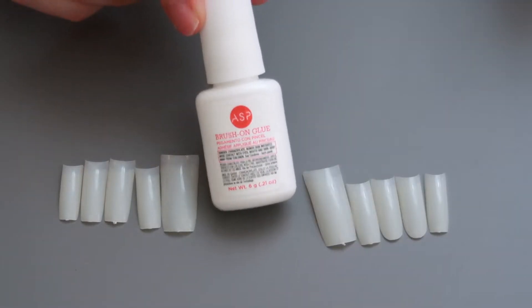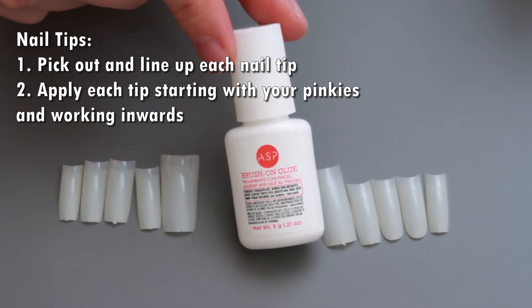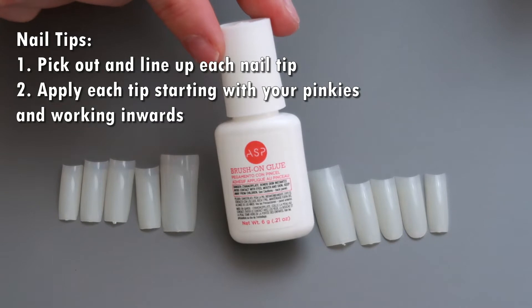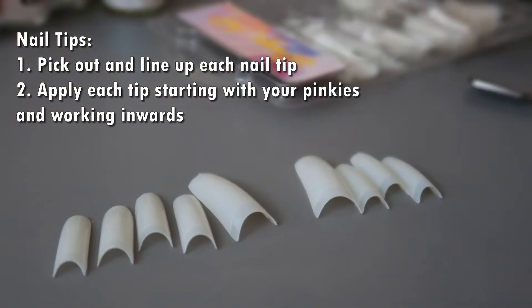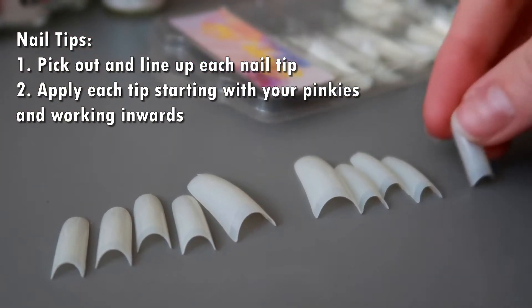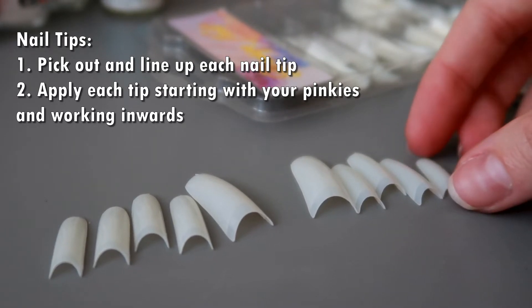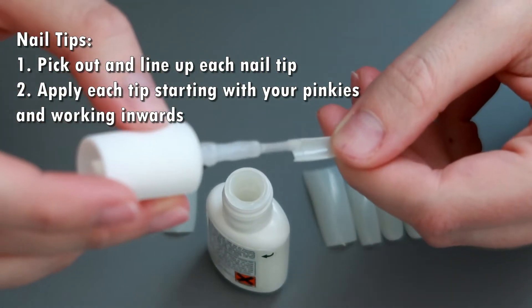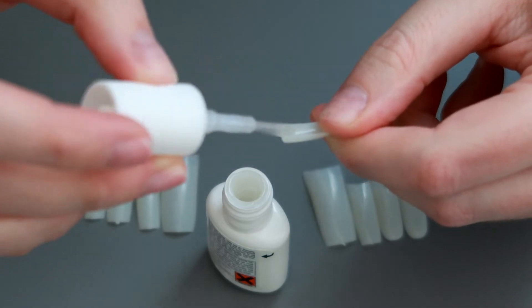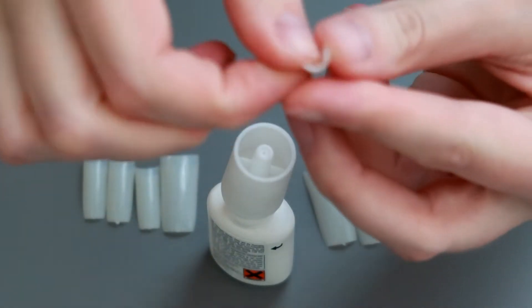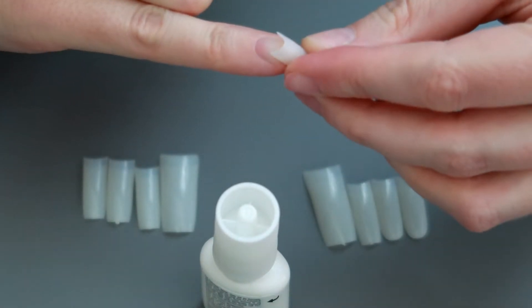Next step is to glue on your nail tips. I've got the little ASP brush on glue from the kit and my number one tip when gluing on nail tips or fake nails in general is to start with your pinkies and work your way in so you always have your thumbs to work with. And also select your nails and line them up before you glue them on just so you know that you have every single nail you need.